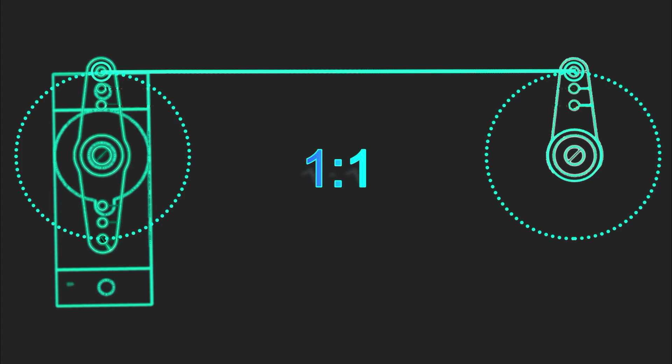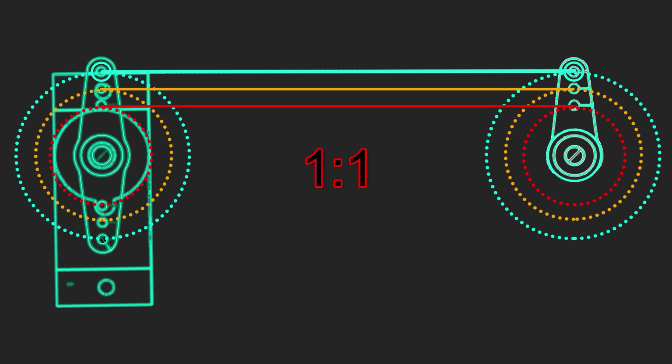If we ignore the tiny amount of friction in the horn and arms mechanism, there is no difference in the amount of torque transfer unless you change the ratio on the horn from one to one to something else.